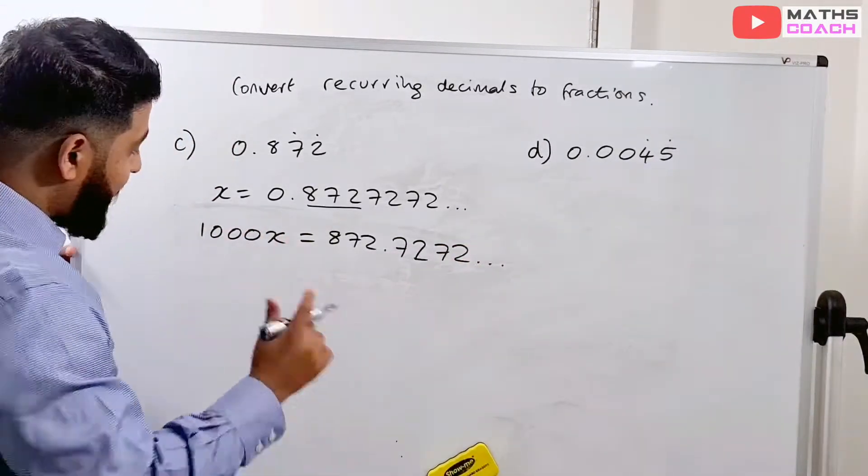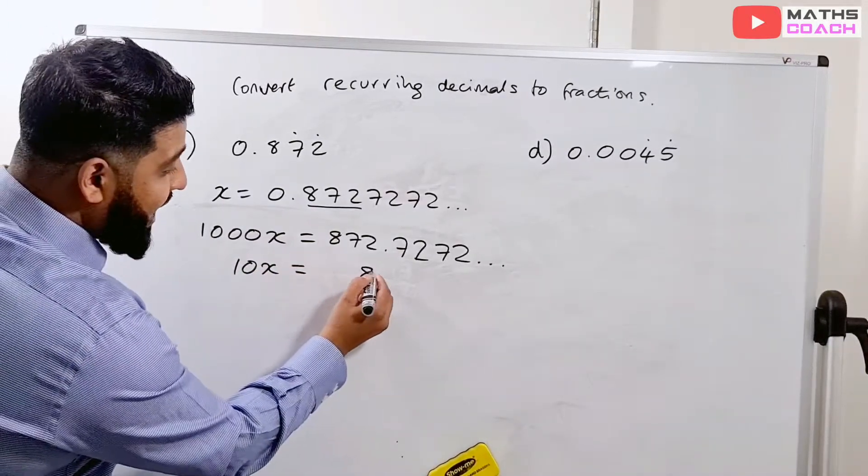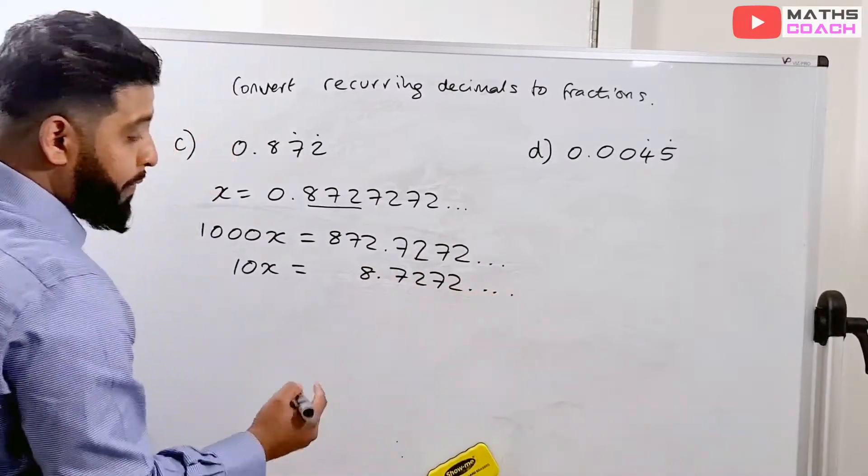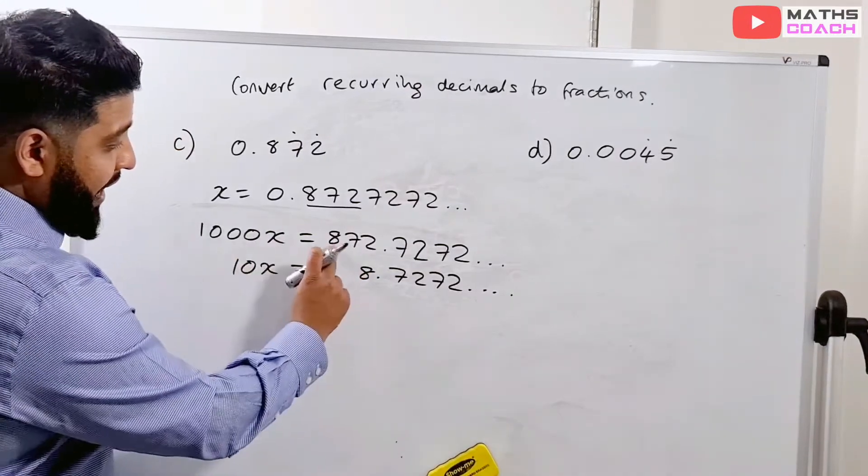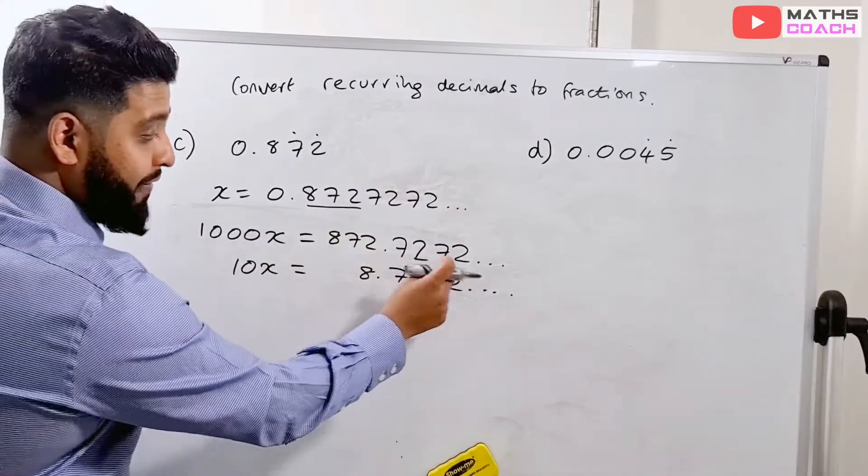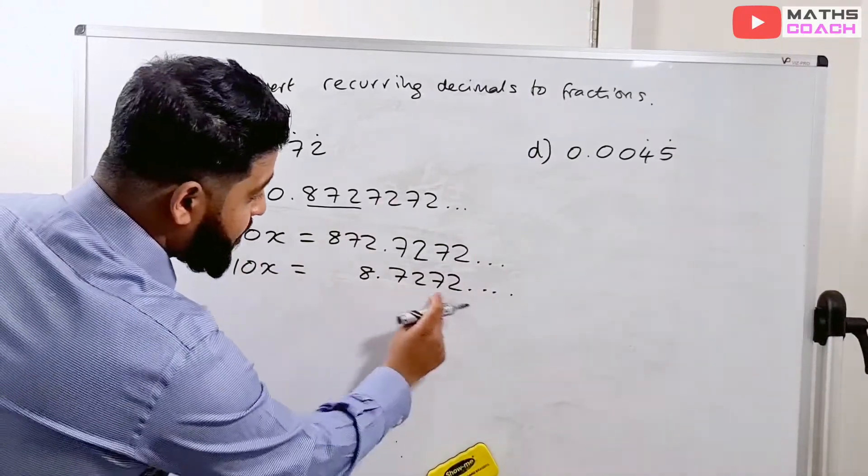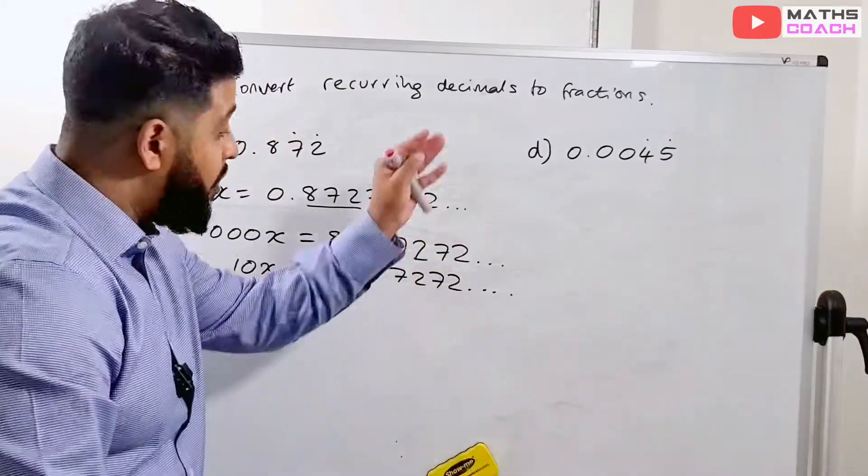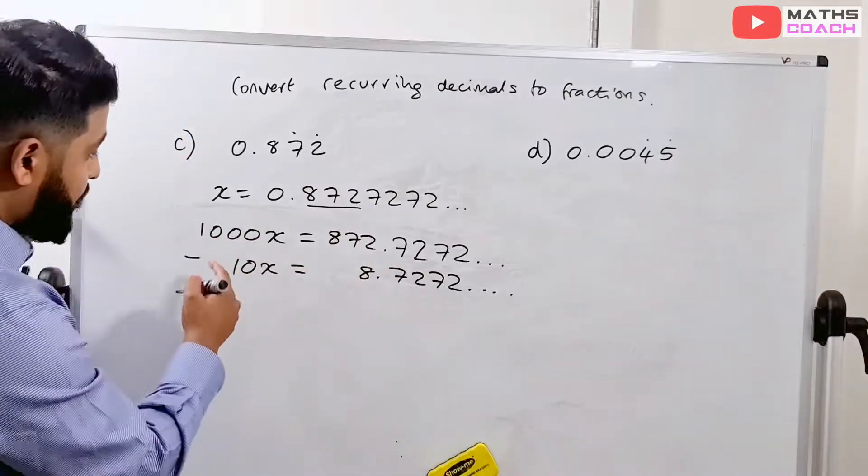So we're going to do 1000x. And what's 1000x? It's going to give us 872.7272, etc., etc. Now, do you remember that original 10x that we had previously? We're going to put that 10x in here. So, and that 10x was 8.7272. Can you see what's happened? We've got 1000x, 872.7272. And we've got 10x. And we are going to take them away from each other because, look, we have what we wanted. After that decimal place, we have the same repeating numbers which will cancel out, leaving us with just the whole numbers here.